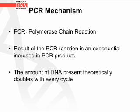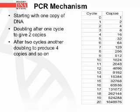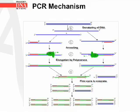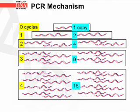The PCR mechanism: PCR stands for polymerase chain reaction. A result of the PCR reaction is an exponential increase in PCR products. The amount of DNA present theoretically doubles with every cycle. Starting with one copy of DNA, there is a doubling each cycle — after 20 cycles, you can end up with over a million copies. The PCR mechanism involves denaturing, annealing, and elongation steps in every cycle, and one copy can become 16 after just four cycles.